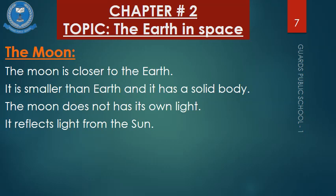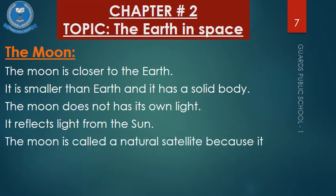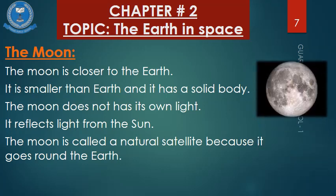The moon is called a natural satellite because it goes round the Earth. Moon ko natural satellite isliye kaha jaata hai kyunki woh planet Earth ke ird-gird round leta rehta hai.